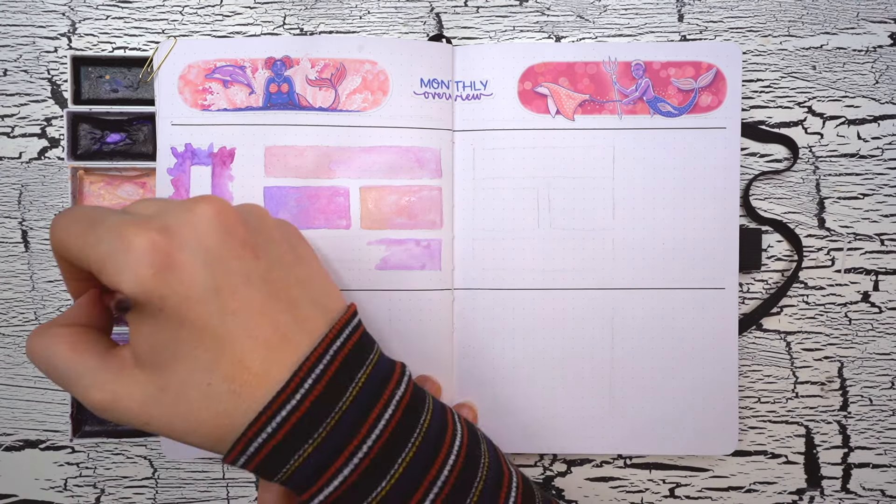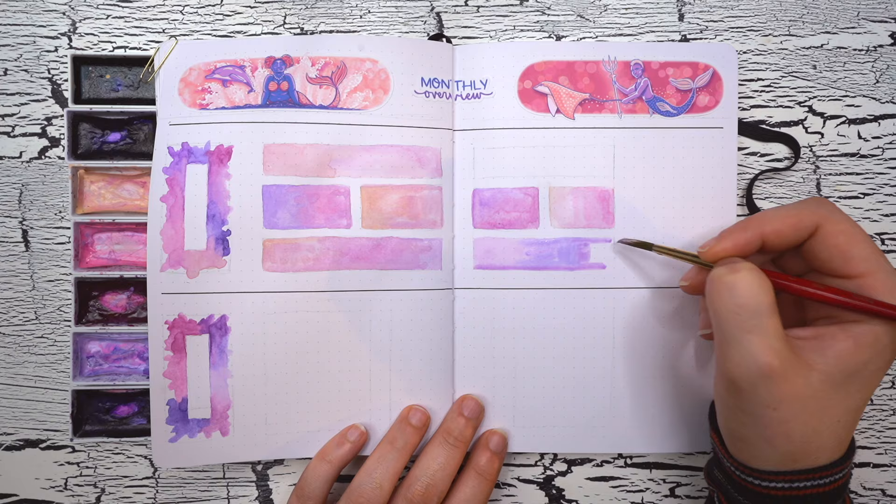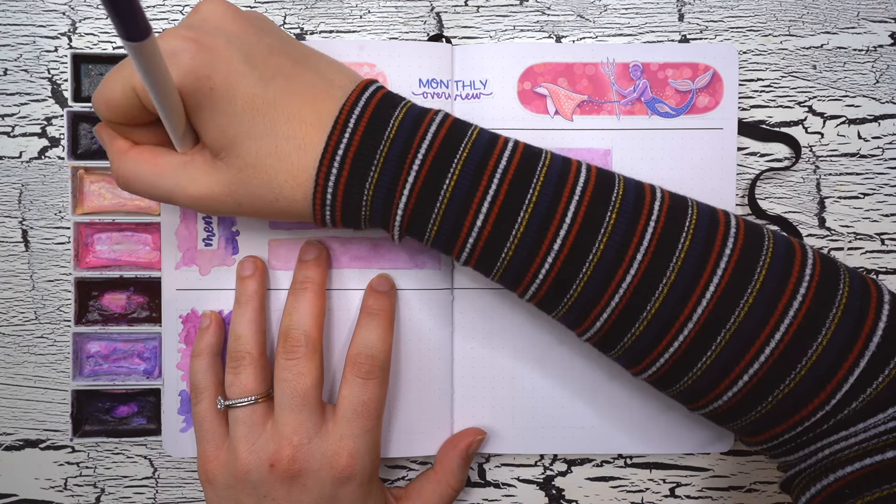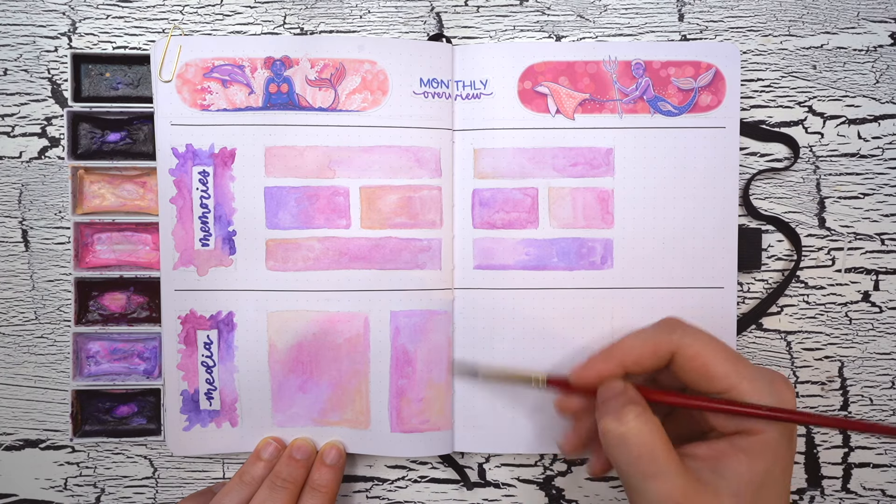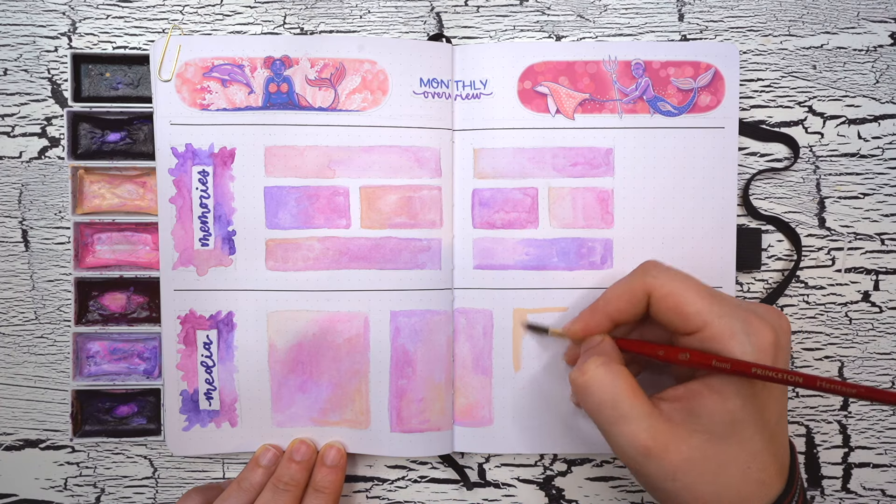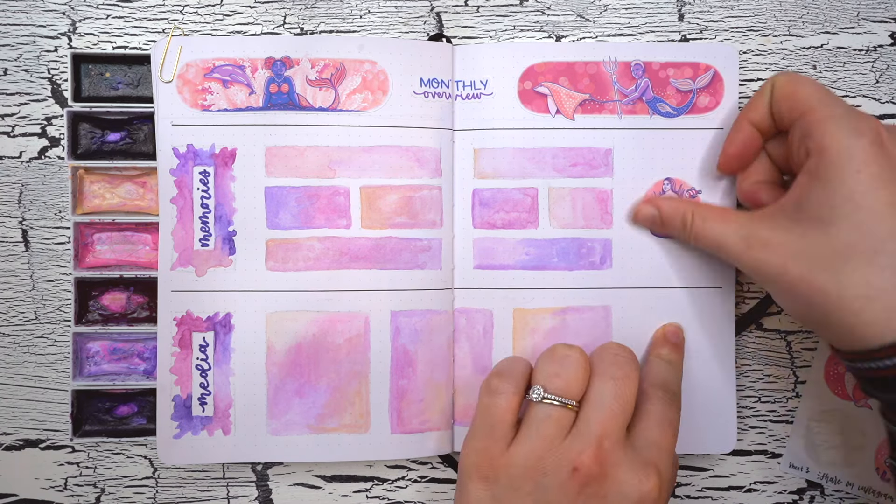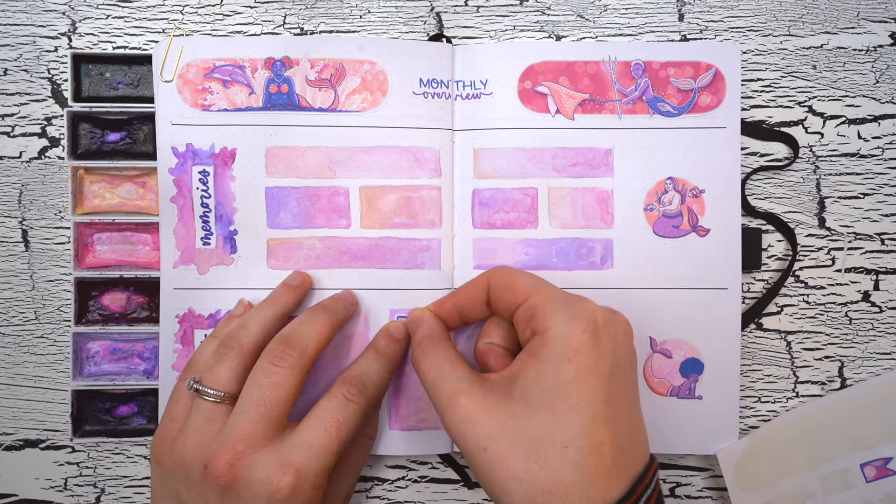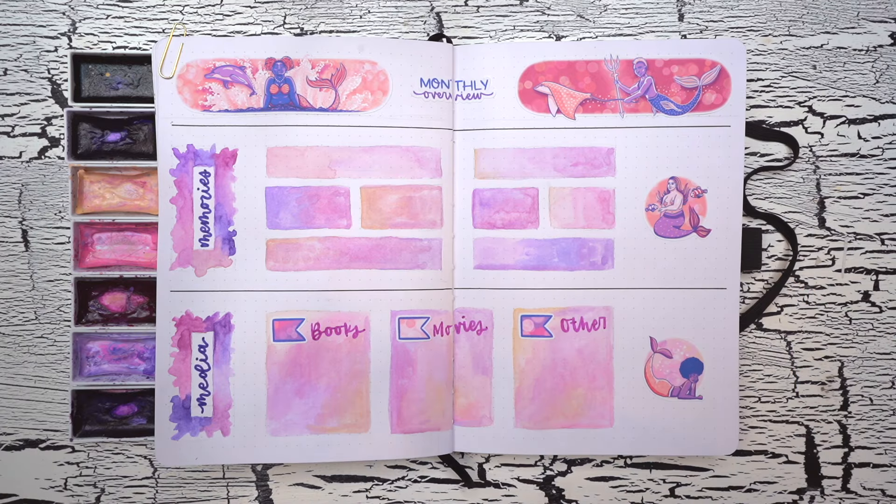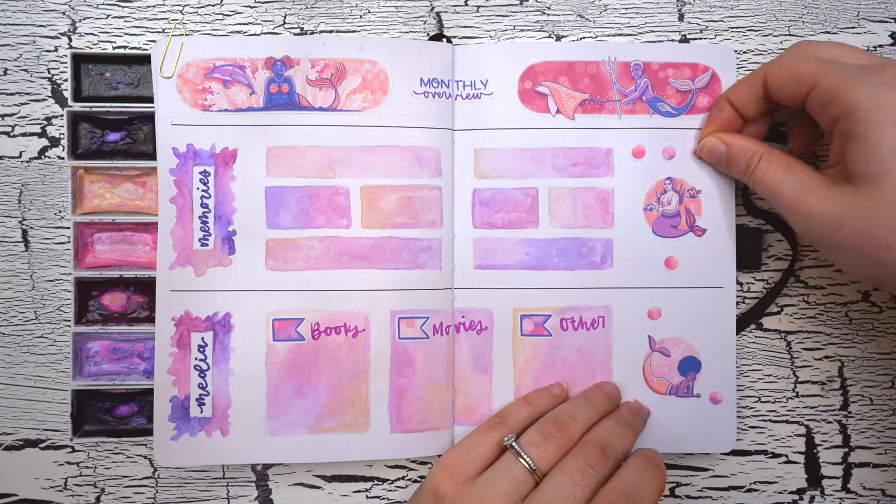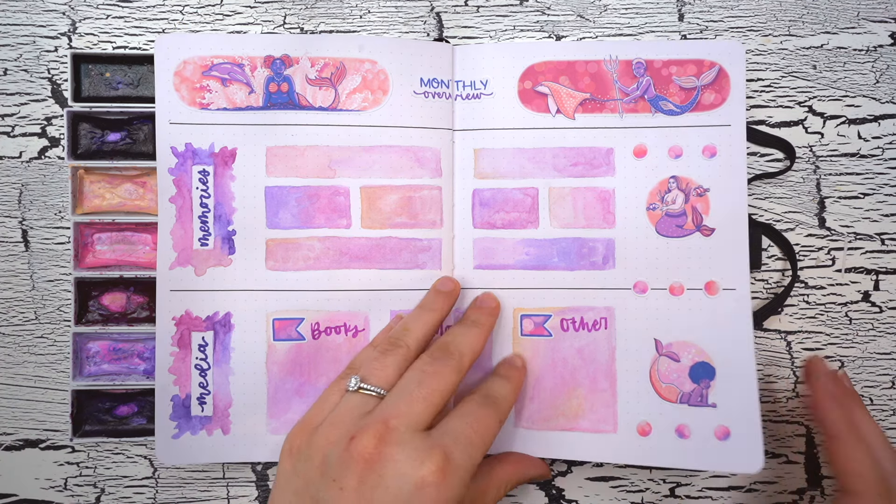At this point in the setup, I was fully obsessed with the watercolor, so I'm basically just going to cover the rest of this spread in pastel watercolor boxes. A bunch on top, which are going to be blank spaces to write in my memories for the month, and then three larger boxes on the bottom for books, movies, and any other media that I consume in May. I really love how these watercolors blended together throughout this entire setup, and people were requesting a whole sticker collection based on these watercolor splashes. I really love that idea, so I'm definitely keeping that on my list of new sticker collections for the near future.